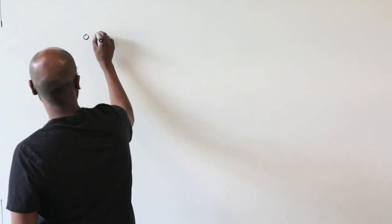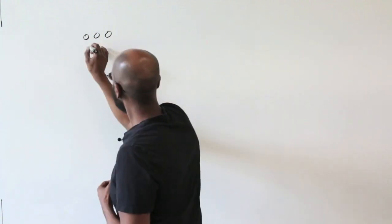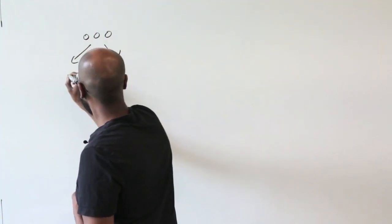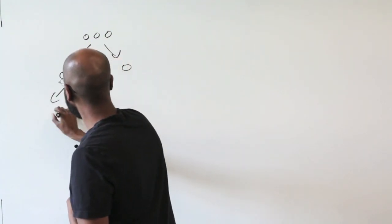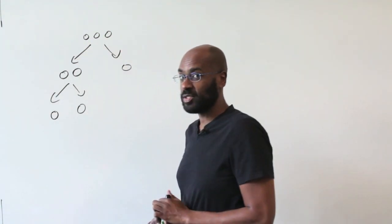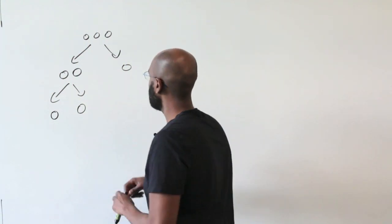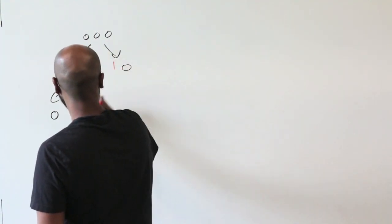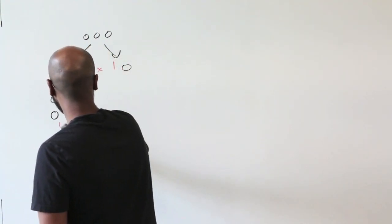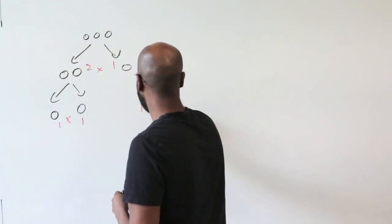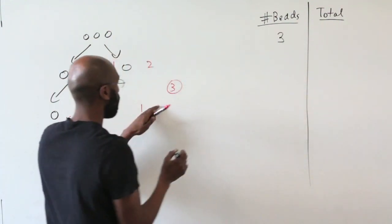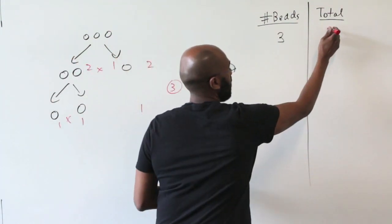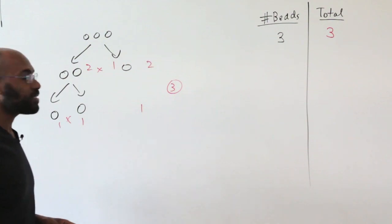So say we started with a pile with three beads. Here we can split it up only into a pile with two and a pile with one. And then subsequently, this pile needs to be split into two piles of one. So if we add all this up, we have two and one, one and one, we multiply these, we get two and one, which is three. So if our total number of beads to start with is three, the total that we get at the end for the sum of all the products is three.